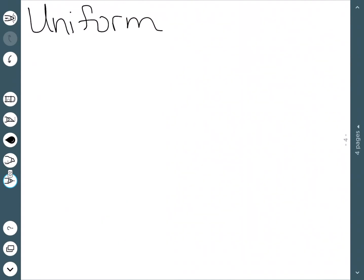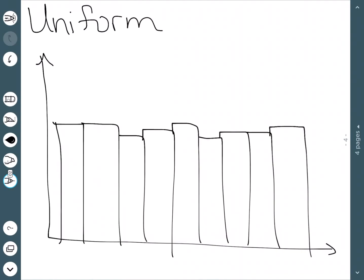The next one we'll look at is called uniform, also sometimes called regular. Here's a uniform distribution. The idea is that every class has equal frequency or very close to equal frequency, and it kind of looks like a rectangle. If we were to roll a die randomly 100 times and try to form a histogram, it would most likely be uniform.